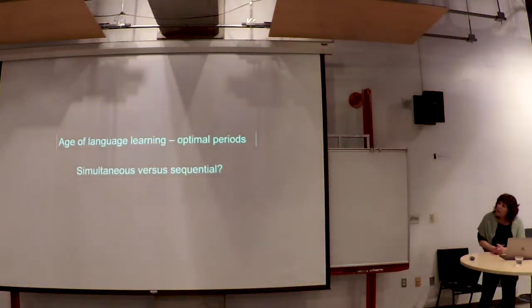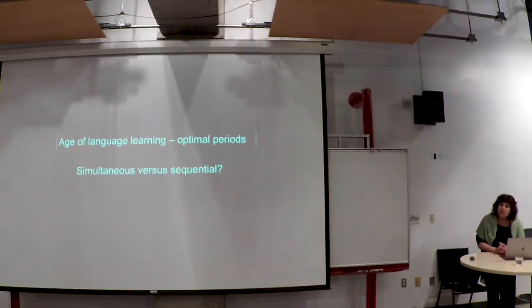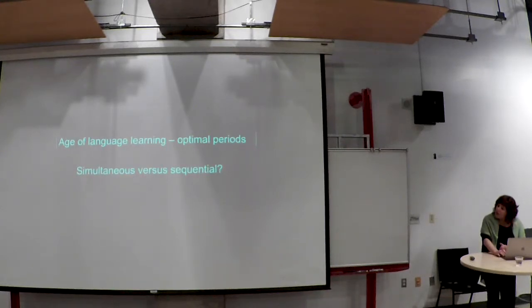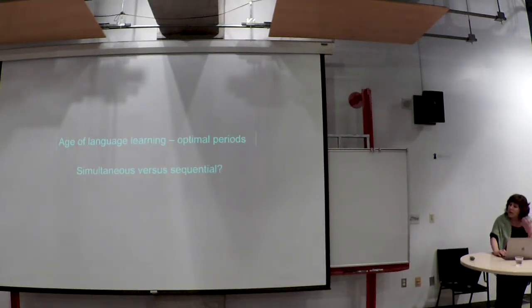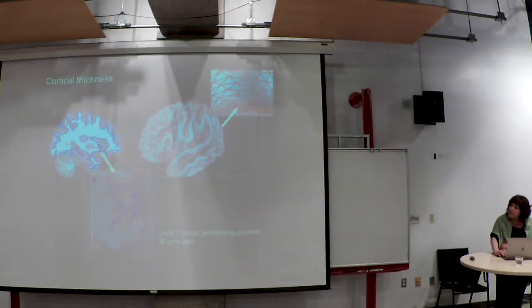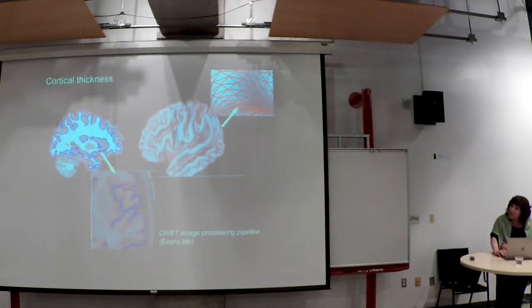A lot of the work we've done has looked at age of language learning: are there optimal periods? We've contrasted simultaneous learning of two languages — two languages from birth — to sequential learning, one language earlier and one language later. In one study we looked at cortical thickness to see whether the thickness of the cortex differs in people who learn languages at different points in time.